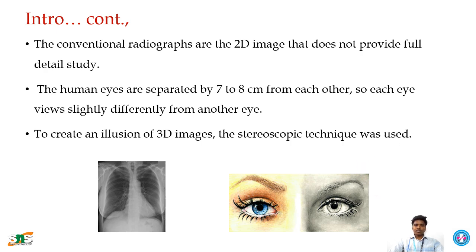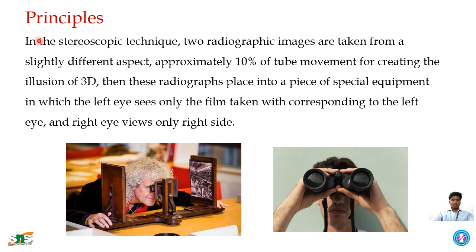Looking at the working principle: two 2D radiographic images are taken from different aspects with a 10% tube movement for creating the illusion of a 3D image. The radiographic images are then placed on either side — the right side image is only visualized by the right eye and the left by the left eye — by placing them in the stereoscope, which creates a 3D illusion image.